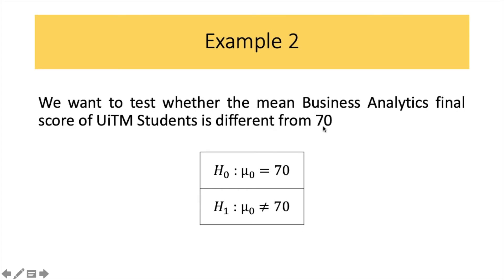Now, because we say it's different from 70, so it can either be greater or it can be smaller. So that's where our H1 here, the hypothesized mean is not equal to 70.